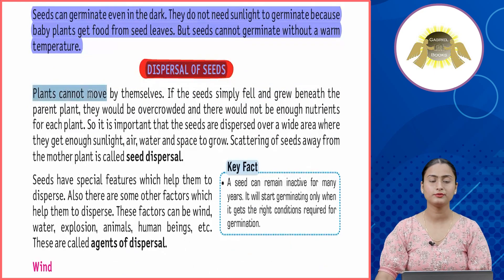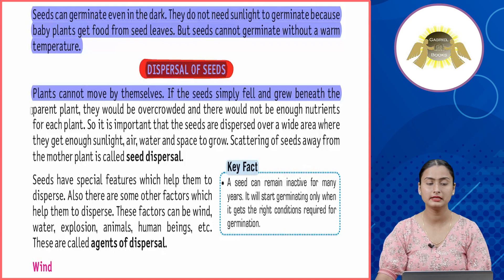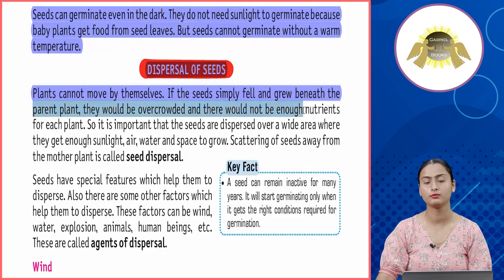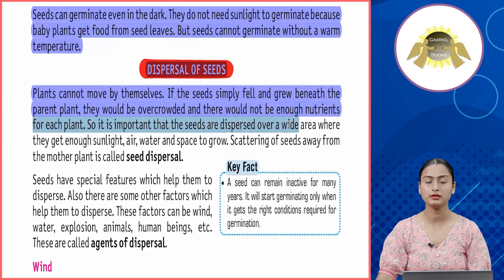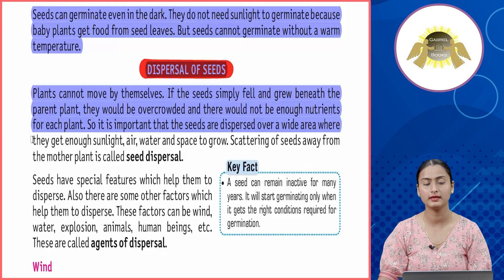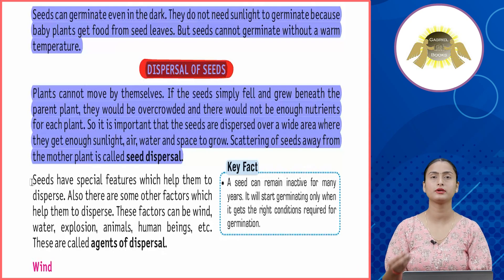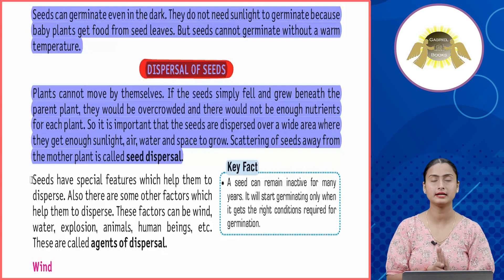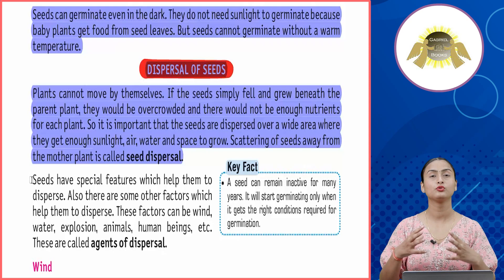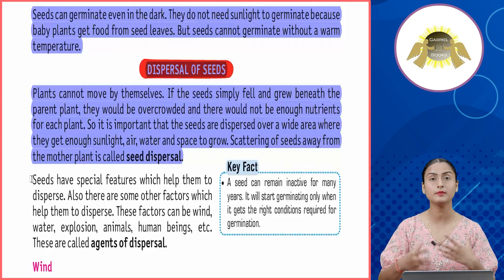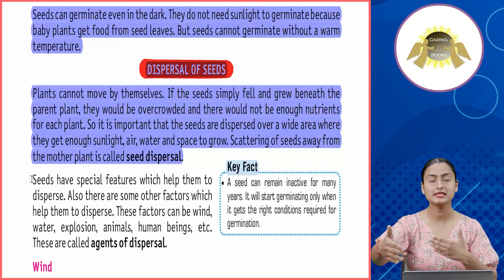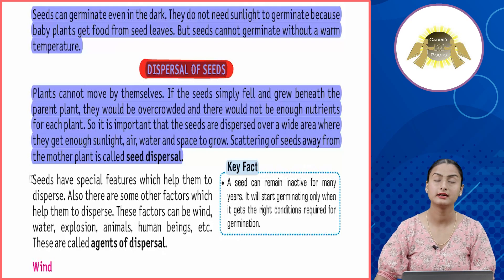Dispersal of seeds: plants cannot move by themselves. If seeds simply fell and grew beneath the parent plant, they would be overcrowded and there would not be enough nutrients for each plant. So it is important that seeds are dispersed over a wide area where they get enough sunlight, air, water, and space to grow. The scattering of seeds away from the mother plant is called seed dispersal. Seeds have special features which help them disperse, and agents of dispersal include wind, water, explosion, animals, and human beings.